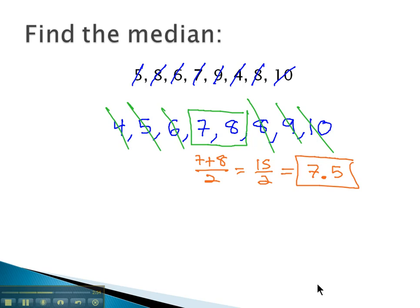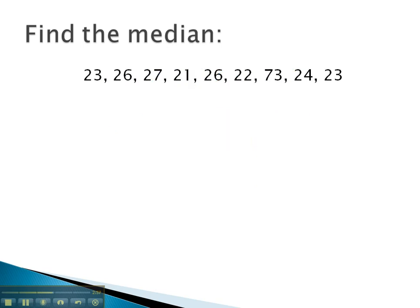Let's take a look at one more example, where we calculate the median. Here, the smallest value is 21, then we have a 22, then there's a couple of 23's. Next, there's a 24, a couple of 26's, then there's a 27, and finally the 73.